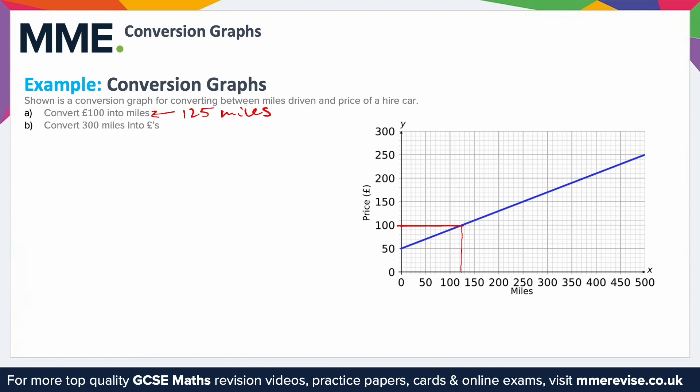To convert 300 miles into pounds, find 300 miles on the x-axis, go up to where it meets the graph, and then go across to where it meets the y-axis. This is a couple of minor squares past 150, so we need to figure out what a minor square is worth. Between 0 and 50 there are 5 squares, and 50 divided by 5 is 10, so each minor square is worth 10. Two minor squares will be worth 20, so this is 170.